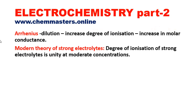We need to look at the modern theory of strong electrolytes. The degree of ionization of strong electrolytes is unity at moderate concentrations, and it is uniform throughout different concentrations. So we can simply reject the Arrhenius explanation for the increase in molar conductance on dilution. By just changing the concentration, there is no change in the degree of ionization of strong electrolytes.